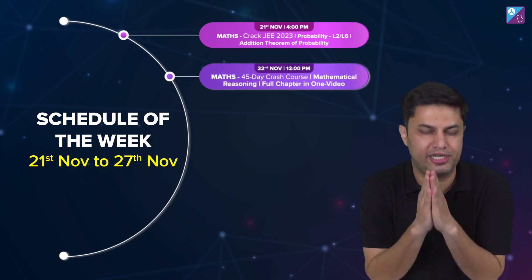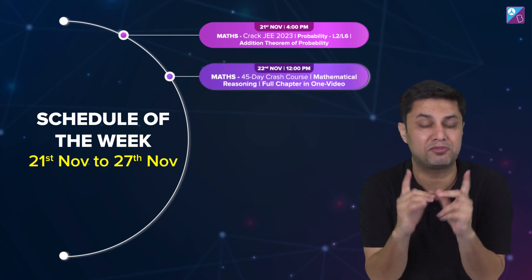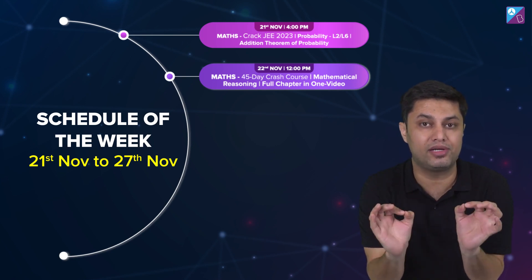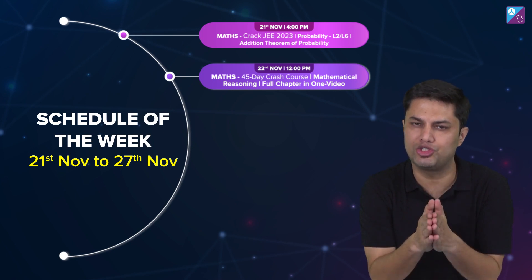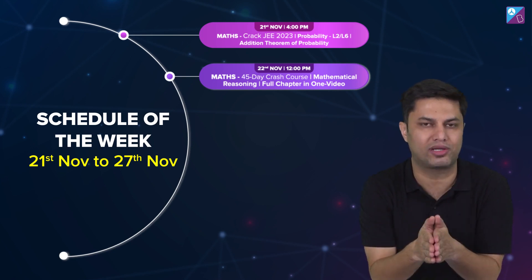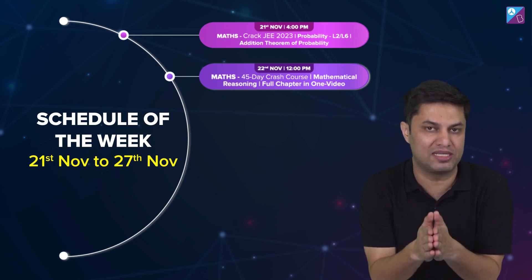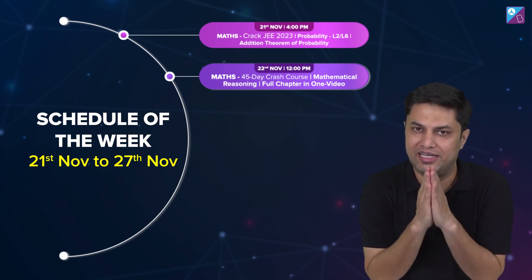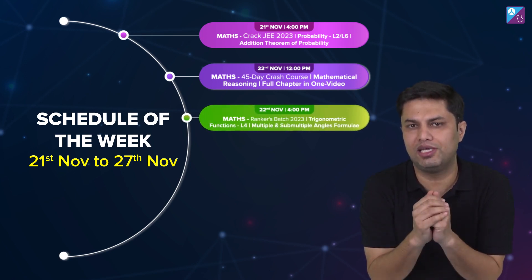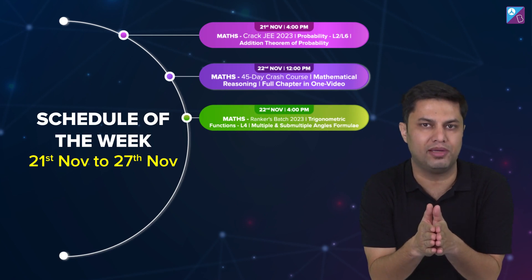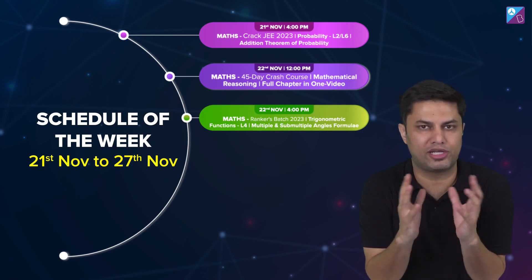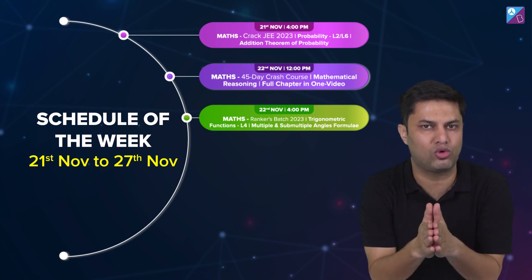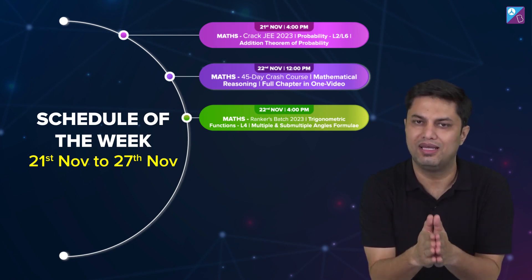Then on 22nd November, Tuesday at 12 p.m., we're gonna do the most important lecture — Mathematical Reasoning in One Shot — which is part of the 45-day crash course series. Then on Tuesday at 4 p.m., we're gonna do the Rankers Batch Trigonometric Functions Lecture Number 4.